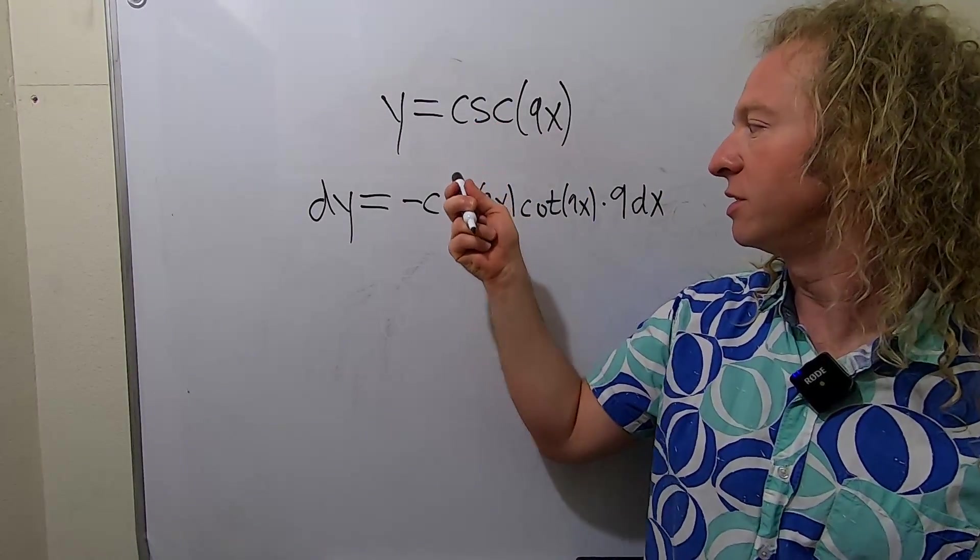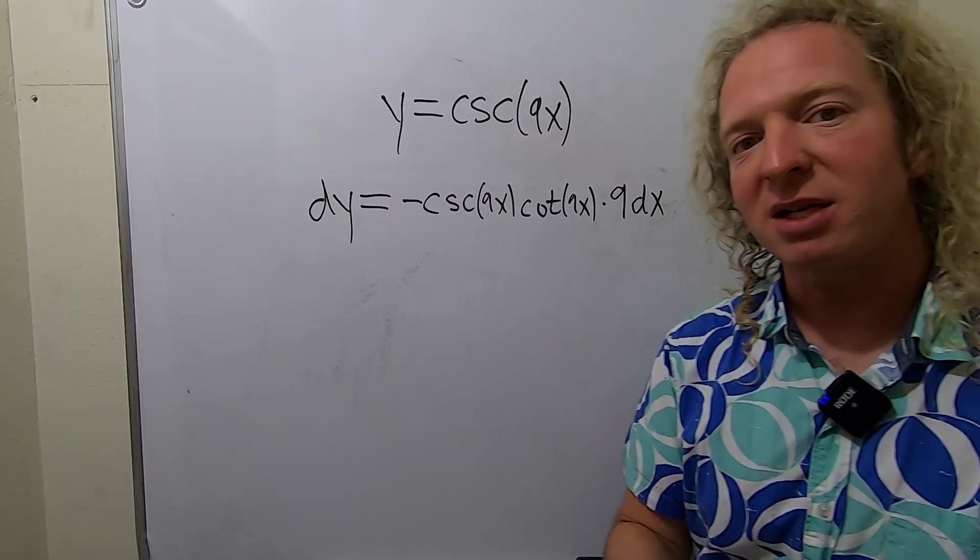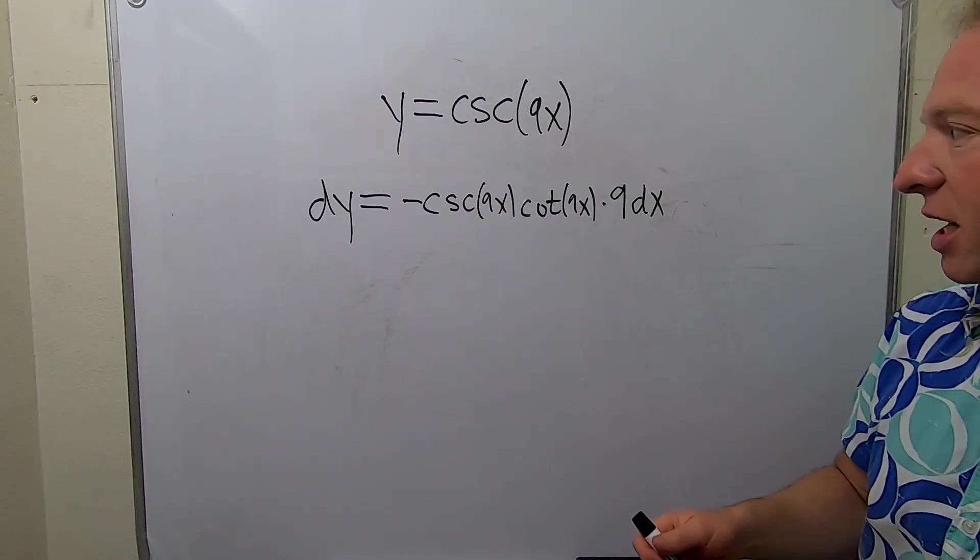So again, the derivative of cosecant is negative cosecant cotangent. We have an inside piece that's 9x, its derivative is 9, and let's not forget the dx.